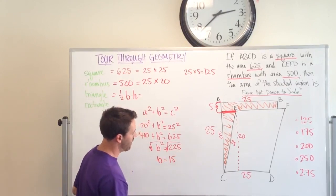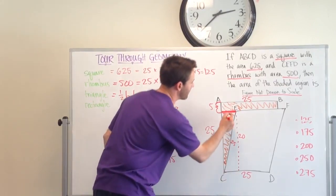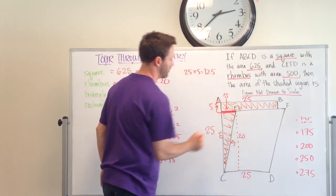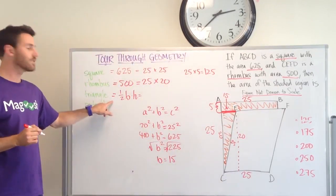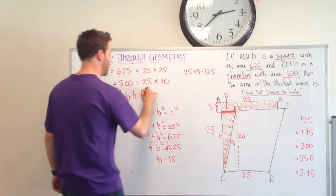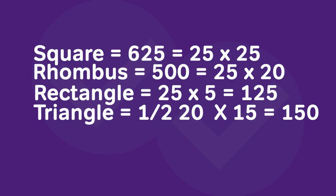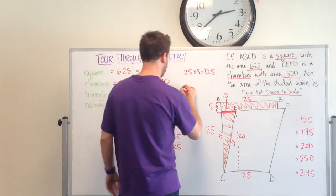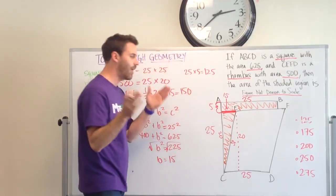Now I know that this side is 15. And now I can solve for the area of the triangle. So one half base is going to be 20 times 15. One half of 20 is 10. 10 times 15 is 150.